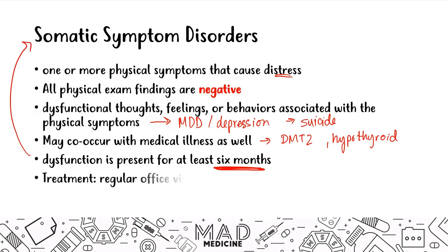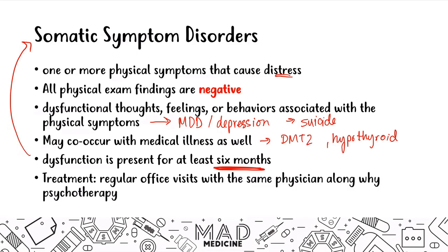The treatment is very simple. You want to have recurrent office visits with the same physician, along with psychotherapy. The reason is that a lot of times these patients will report back pain or other physical symptoms with no identifiable cause, and a doctor might dismiss them — maybe afraid they want opioids, or thinking the patient is just hysterical. This turns the patient away from the medical system. So you want regular office visits with the same physician to provide regularity in their life, along with psychotherapy such as cognitive behavioral therapy, CBT, an SSRI, or other types of psychotherapy to help the patient progress.